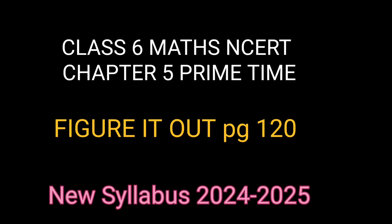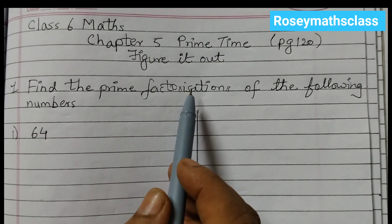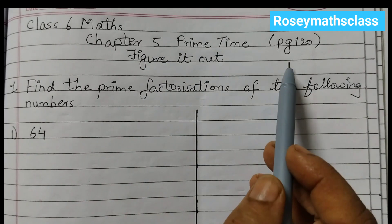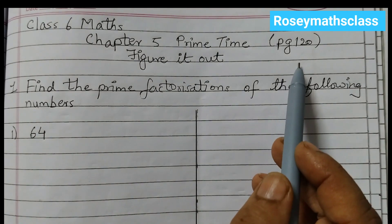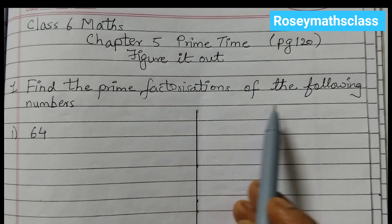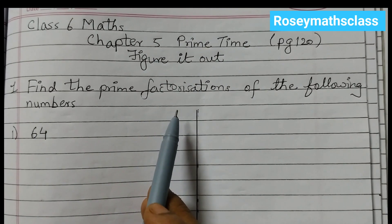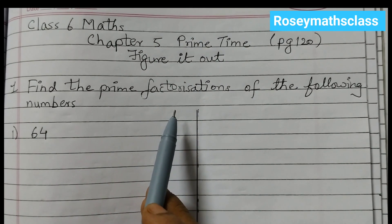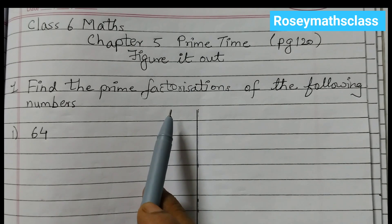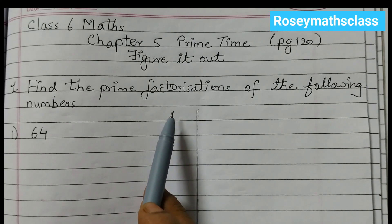Hello students, welcome back to Rosiematt's class. Today we shall do question number 1, figure it out given on page number 120: find the prime factorization of the following numbers. Prime factorization means that we find out the prime factors — the prime numbers which are factors of that number.